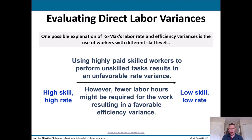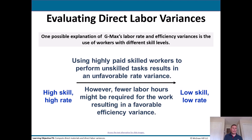Evaluating direct labor variances: one possible explanation of G-Max's labor rate and efficiency variances is the use of workers with different skill levels. Using highly paid skilled workers to perform tasks results in an unfavorable rate variance. However, fewer labor hours might be required for the work, resulting in a favorable efficiency variance. If you use highly trained, highly skilled people, they cost you more — but maybe they save you time.